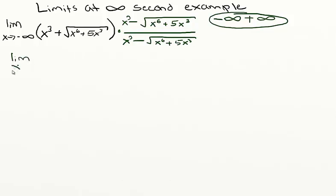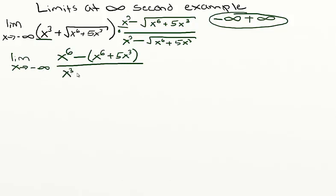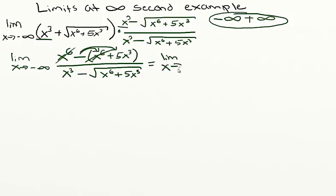So now we're going to get the limit as x approaches negative infinity. The first term squared is x to the 6th, and we subtract from it the second term squared, which is x to the 6th plus 5x cubed. Our denominator is x cubed minus the square root of x to the 6 plus 5x cubed. Conveniently, the x to the 6th terms cancel out, so we can rewrite this as the limit of negative 5x cubed over x cubed minus that square root.